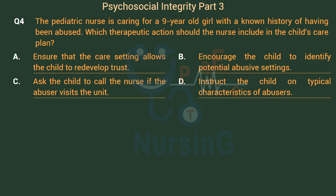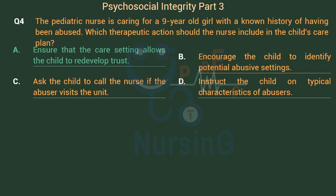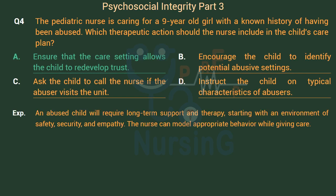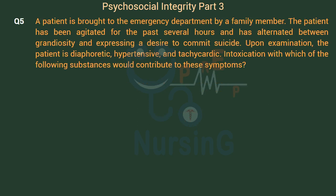The right answer is Option A: Ensure that the care setting allows the child to redevelop trust. An abused child will require long-term support and therapy, starting with an environment of safety, security, and empathy. The nurse can model appropriate behavior while giving care.